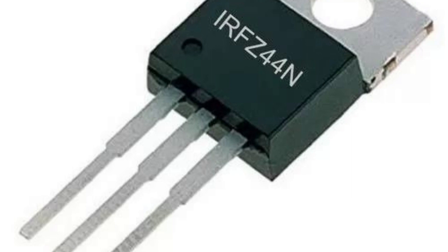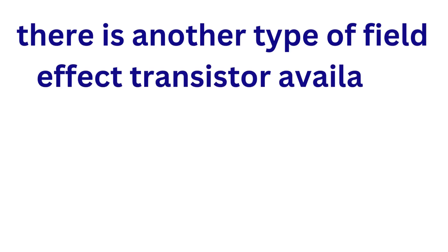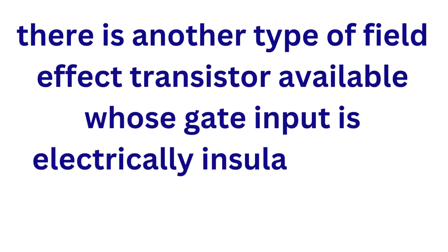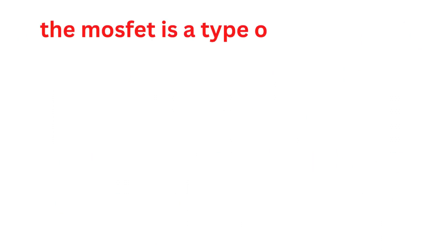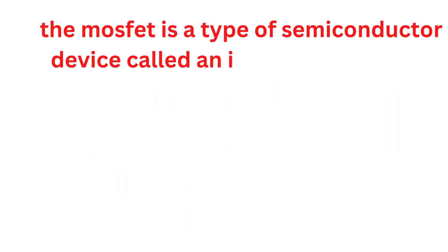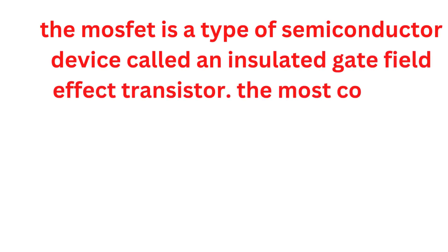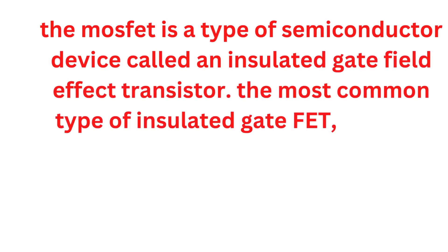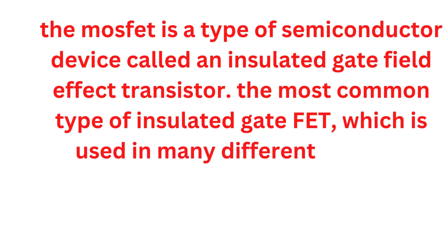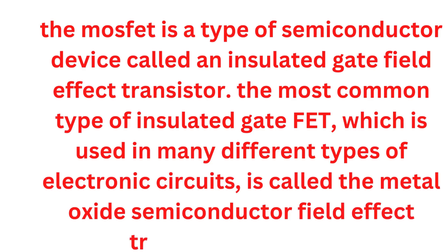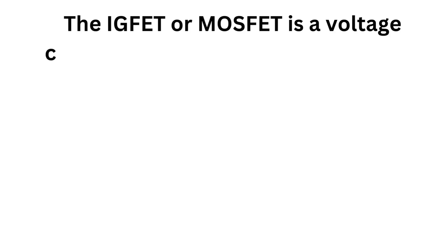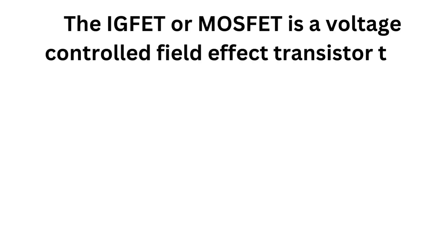As well as the junction field-effect transistor, JFET, there is another type of field-effect transistor available whose gate input is electrically insulated from the main current-carrying channel. The MOSFET is a type of semiconductor device called an insulated gate field-effect transistor. The most common type of insulated gate FET is called the metal oxide semiconductor field-effect transistor or MOSFET.